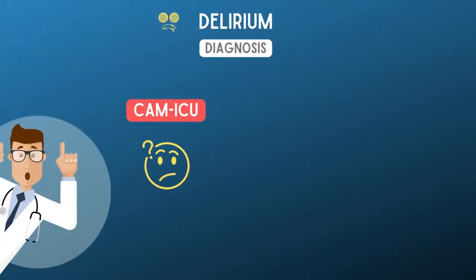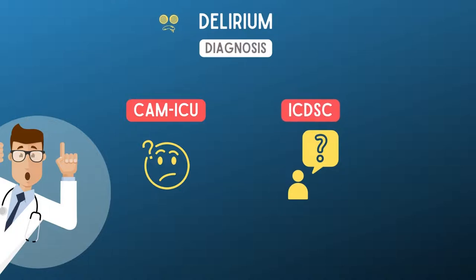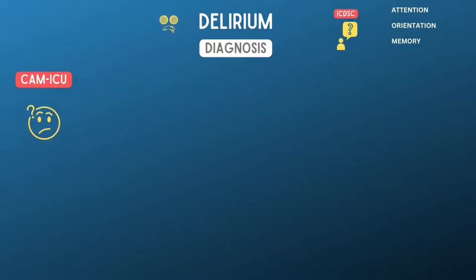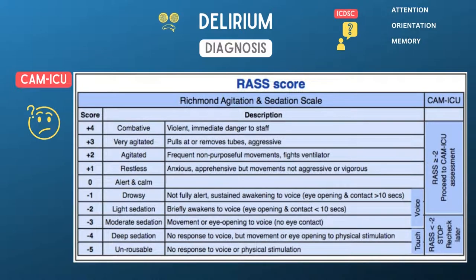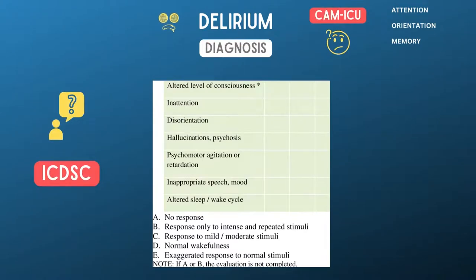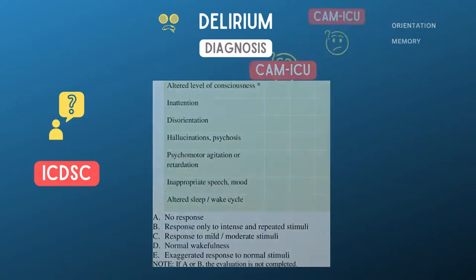The Confusion Assessment Method ICU (CAM-ICU) and the Intensive Care Delirium Screening Checklist (ICDSC) are both extensively validated and used for delirium diagnosis and evaluation over time. They allow the assessment of attention, orientation, and memory. In CAM-ICU, the level of consciousness is evaluated through a standardized sedation scale such as the Richmond Agitation Sedation Scale (RASS), which was discussed in the previous chapter. Through the ICDSC, the level of consciousness is firstly evaluated on a five-point scale, A to E, which ranges from unresponsive (A) to exaggerated response (E). Both scales are provided in the description below.